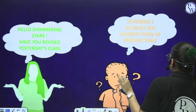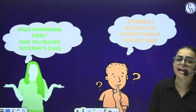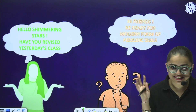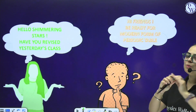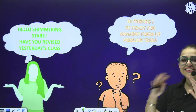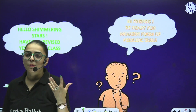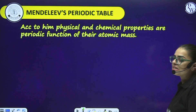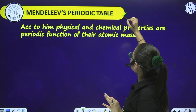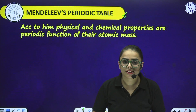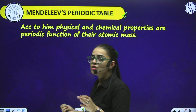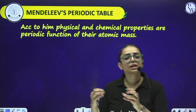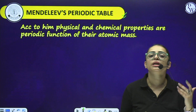Let us start with the very first topic. But first, let us meet your friends Calcium and Barium. Calcium says: 'Hello Shimmering Stars, have you revised yesterday's class?' And Barium says: 'Hi friends, be ready for the Modern Periodic Table today.' Every chemistry student has a periodic table at home - so we are going to learn it! Regarding Mendeleev's Periodic Table: till now every periodic table was based upon the principle that the physical and chemical properties of all elements are dependent only upon atomic weight.